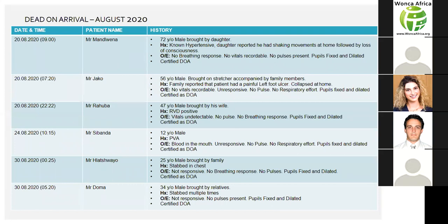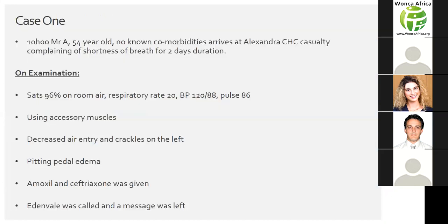Finally for August, Mr. Doma, a 34-year-old male brought by relatives described as having been stabbed multiple times. On examination, not responsive, no pulses present, pupils fixed and dilated — certified as dead on arrival. In the next section, colleague Joshua Smith will go over the case reviews.